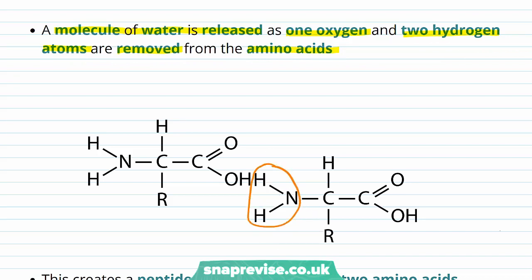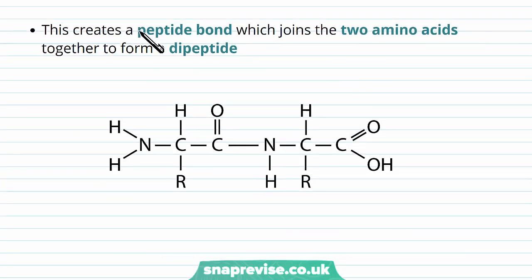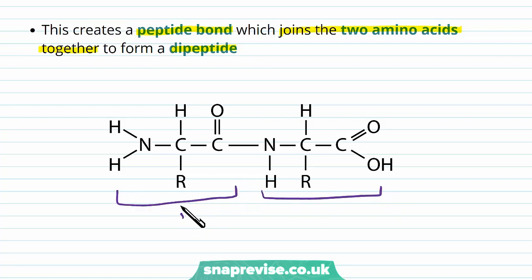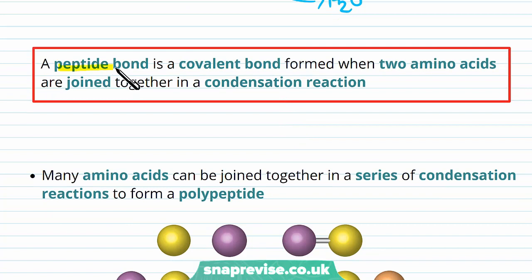The amino group comes close to the carboxyl group of the other amino acid, and during the condensation reaction water is removed — as seen in lipids and carbohydrates too. The OH of one group and the H of another are removed, giving us H2O. When the water is removed the bond forms, and we call it a peptide bond — a covalent bond joining the two amino acids together, forming the dipeptide. So by definition, a peptide bond is a covalent bond formed when two amino acids are joined together in a condensation reaction.